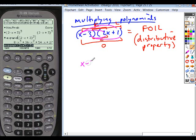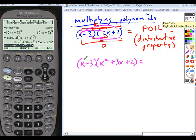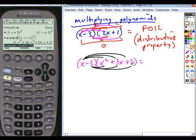So you could take like x minus 3 times x squared plus 3x plus 2, let's say. If you're doing it by hand, you just distribute your x, then distribute through your negative 3.